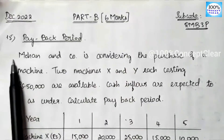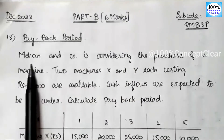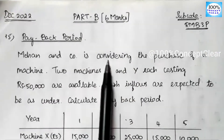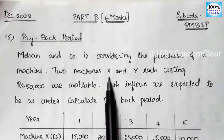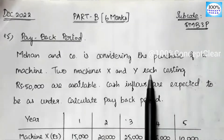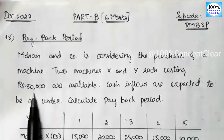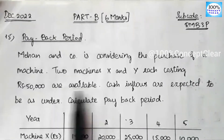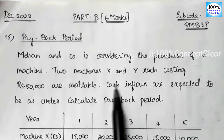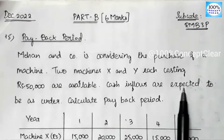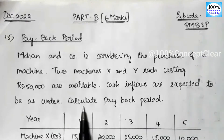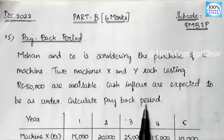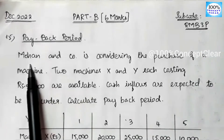Now we will see this question. Morgan & Co is considering the purchase of a machine. Two machines, X and Y, each costing Rs. 50,000, are available. Cash inflows are expected to be as under. Calculate the Payback Period.